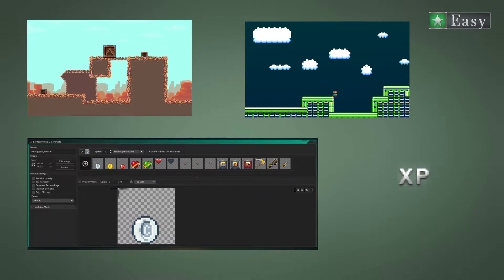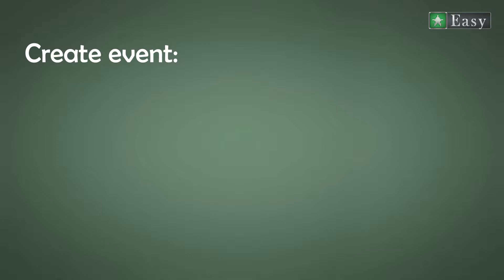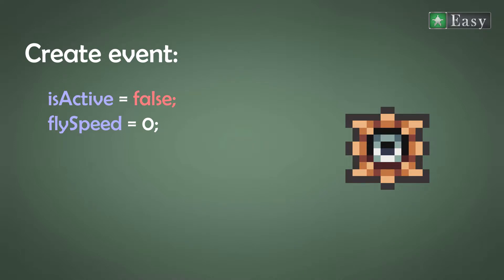So let's get started right away. What do we need? Only two variables: an isActive to toggle flying towards the player, and the flying speed. As a default, we set in the create event that the enemy is docile — meaning isActive is false and the flying speed is set to zero.